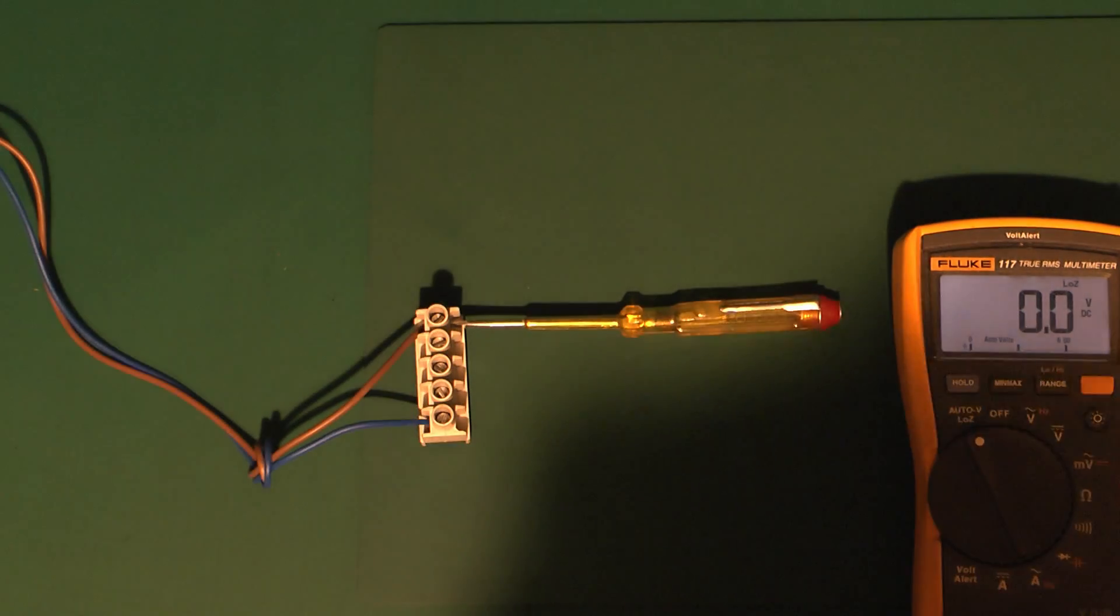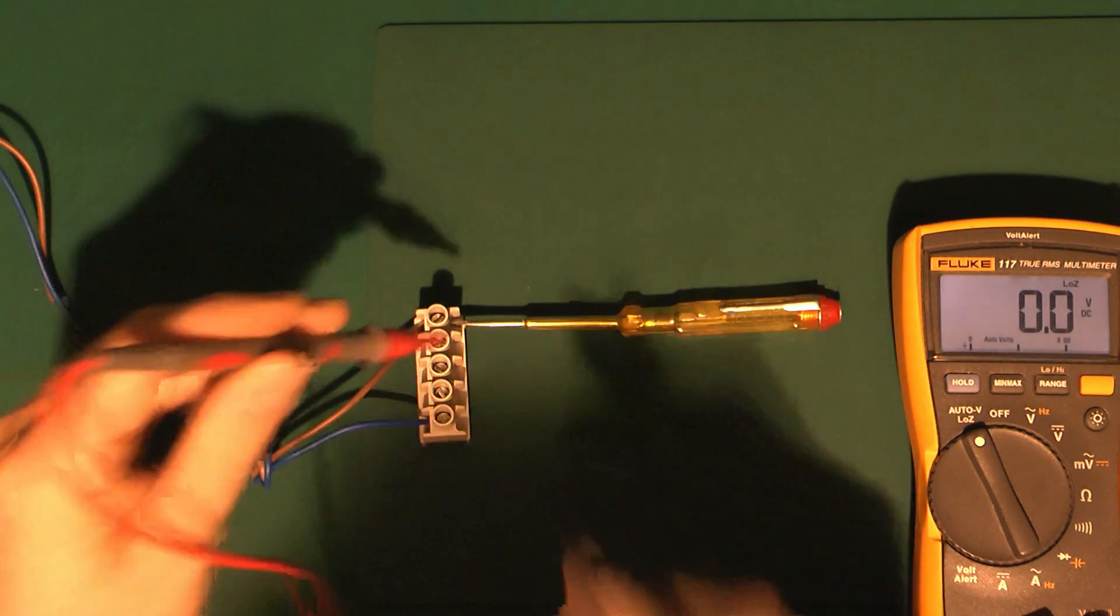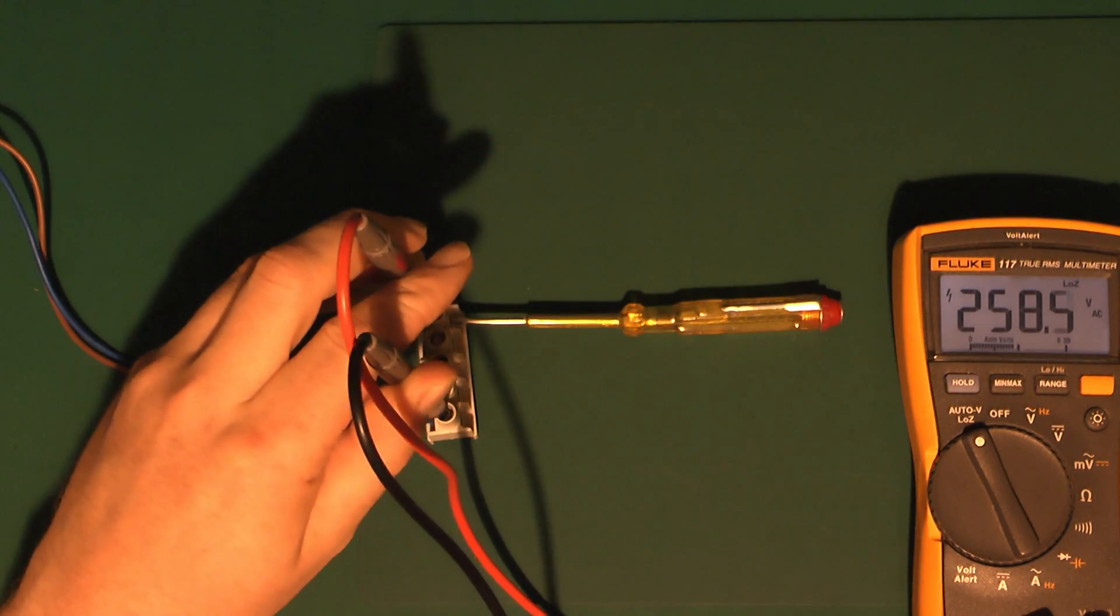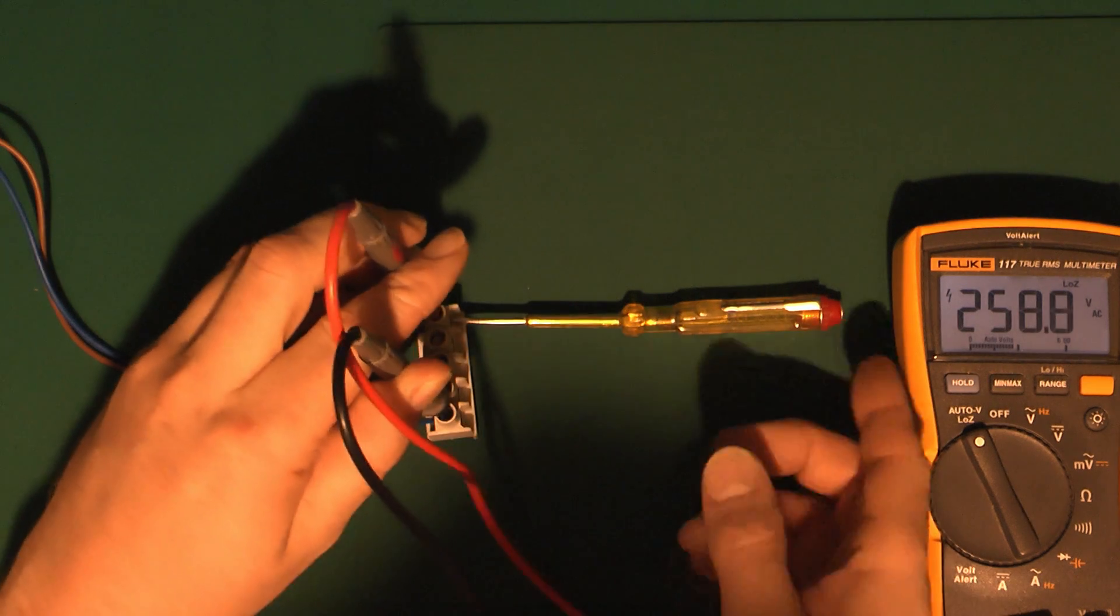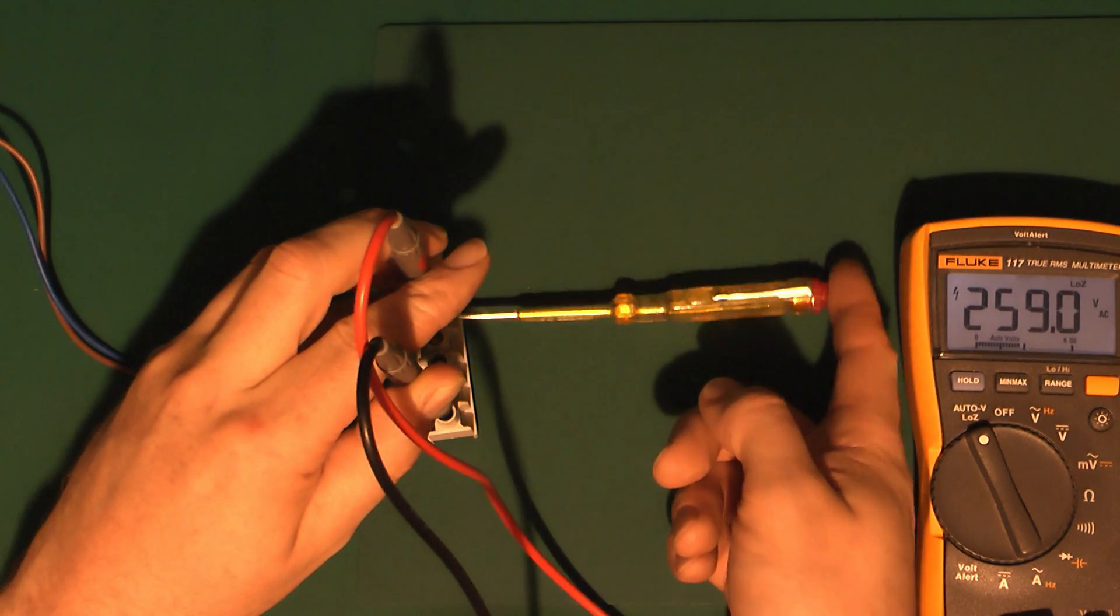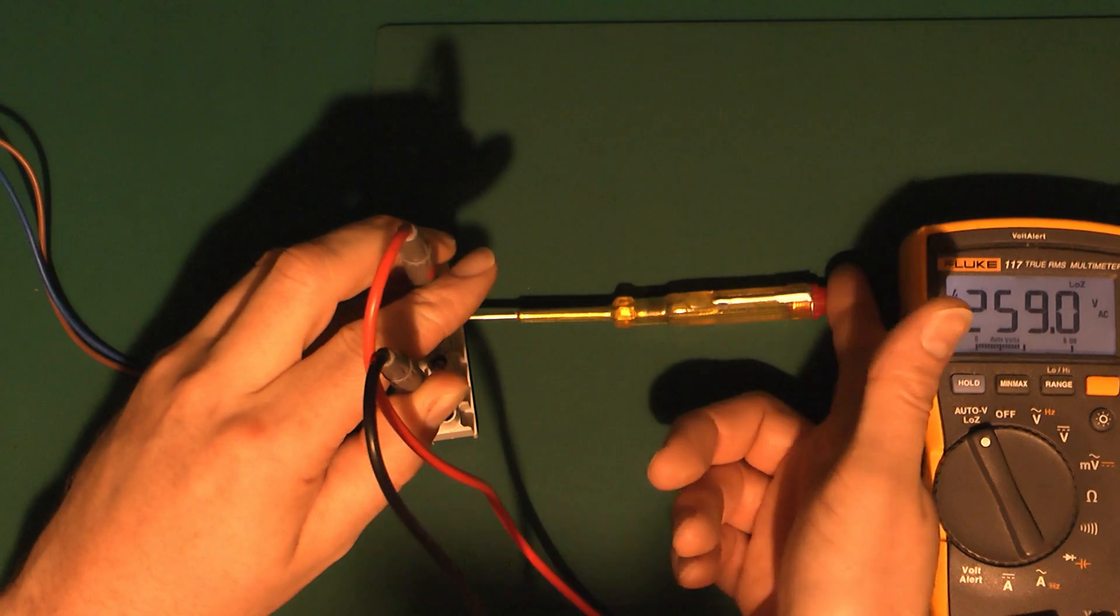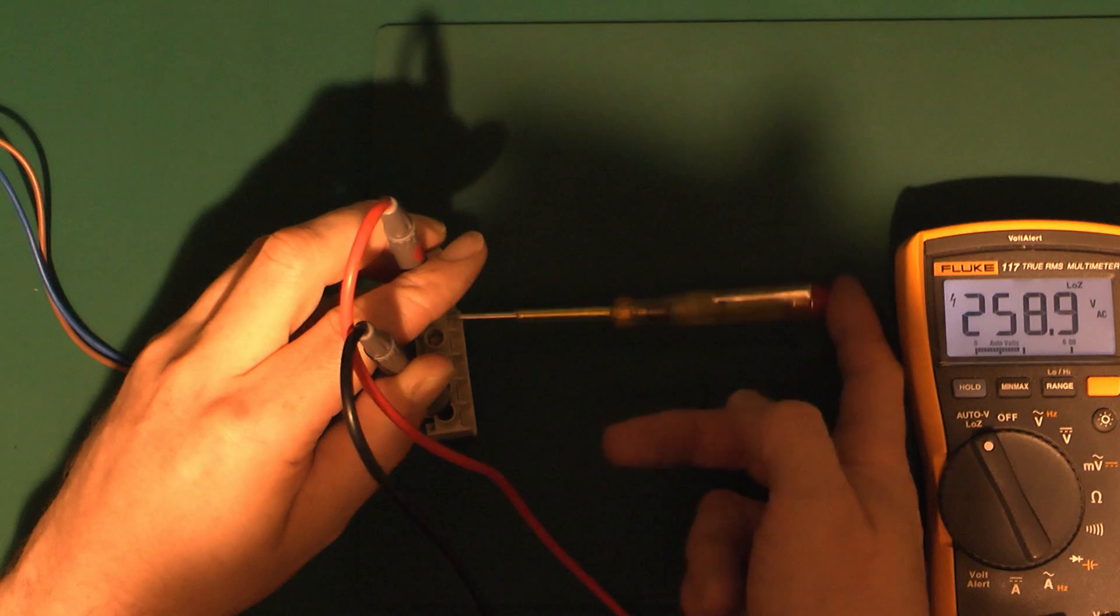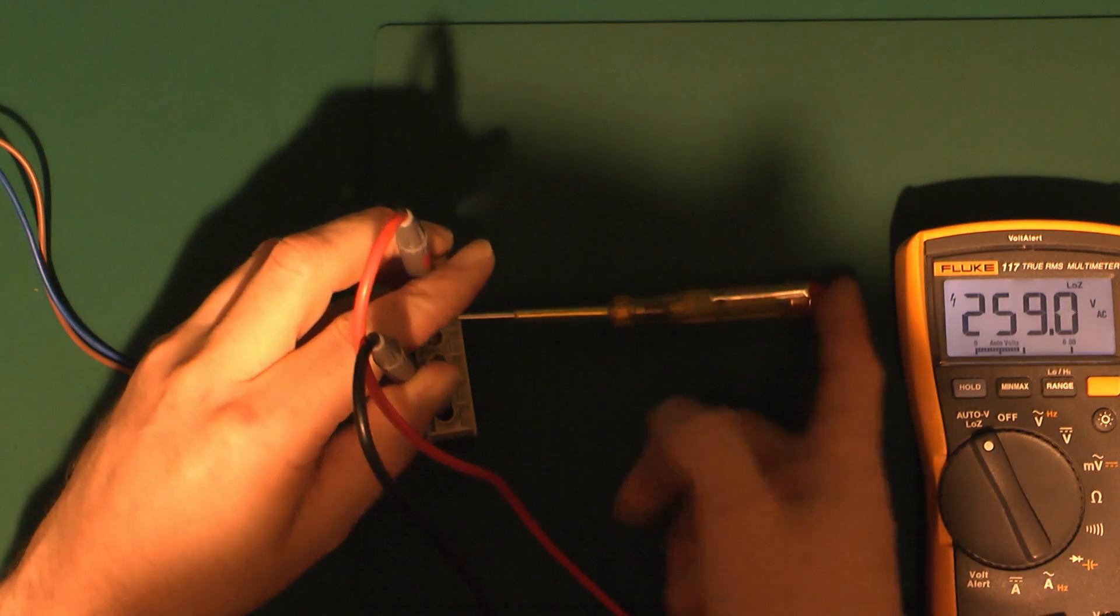Here's the same setup with the lights reduced. So again, if we put the probes in here, there's that 258, nearly 260 volts. But as you can see, it's simply not illuminating. Just put a shadow there. Nope, nothing at all. Totally useless.